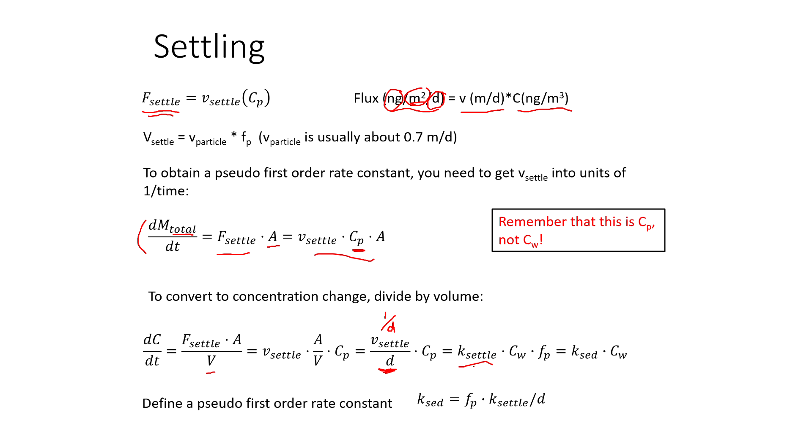And remember, we don't want C_p here. What we really need is C_w. That's the concentration of the chemical across the entire water column. And to get C_p out of C_w, or get C_w out of C_p, we need to multiply by the fraction on the particles. So now we have this K_settle times C_w times F_p, and we could even call this whole thing K_sediment, K_sedimentation, and we would multiply it by the concentration of your chemical in the water column.